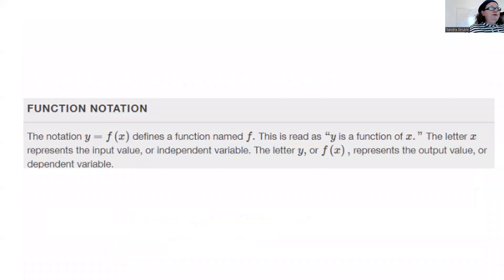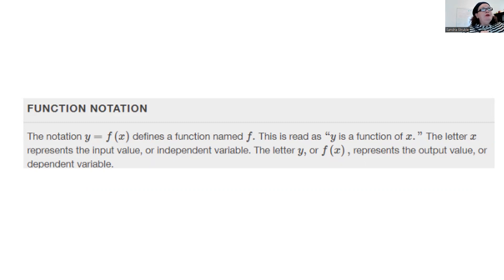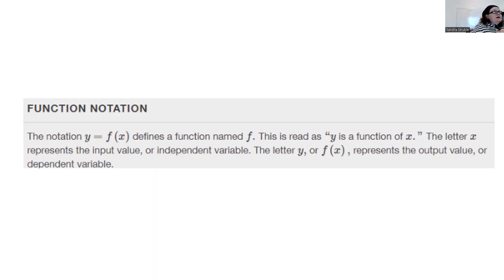Function notation — you've seen this before. Y equals f of x. That's all this is representing. This is NOT f times x — please be careful. This is read as 'y is a function of x.' The letter x represents the input; y or f(x) represents the output. Depending on what x is, that determines what f(x) is. It's not f times x.